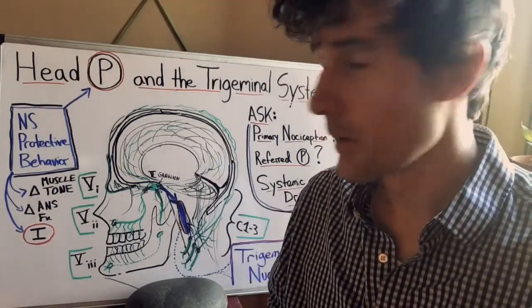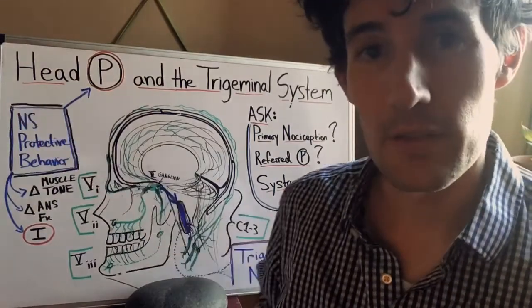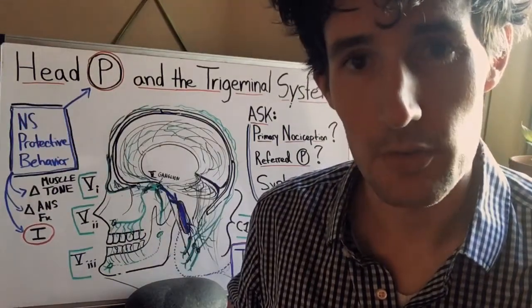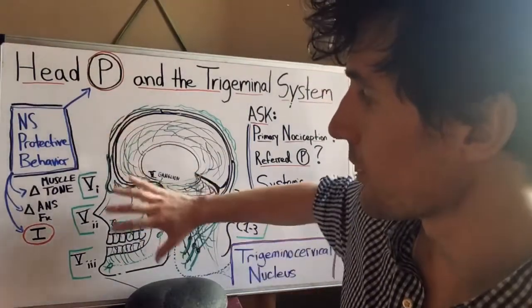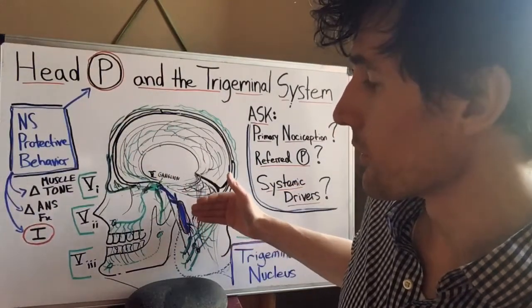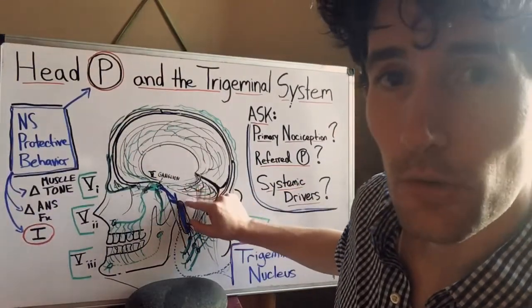Great. So head pain, think of it as an irritation to the trigeminal system, which includes the trigeminal nerve and the upper cervical nerves and the trigeminal cervical nucleus.